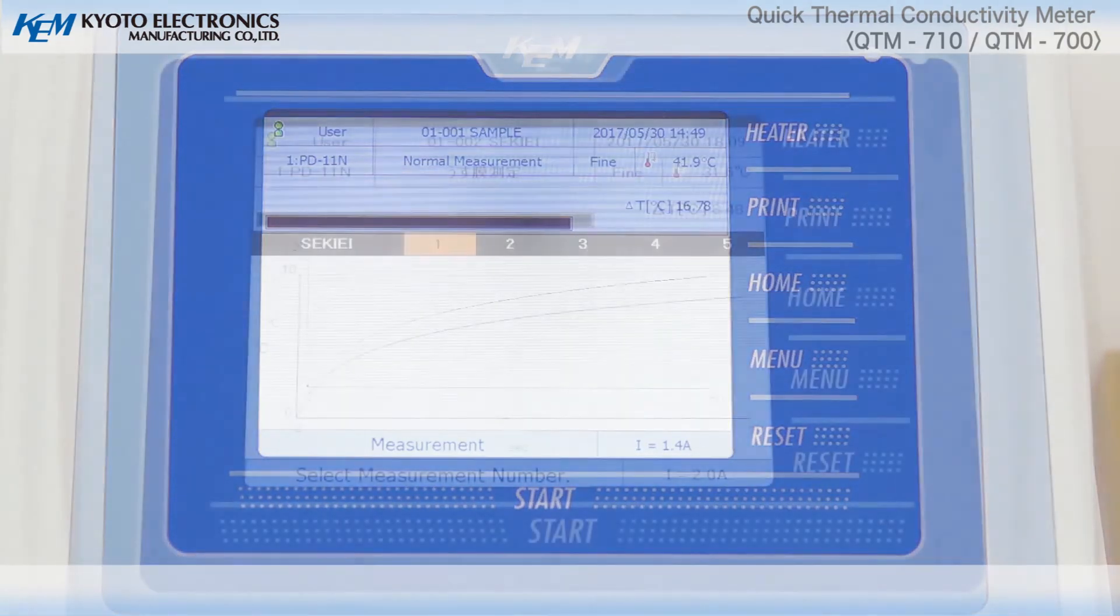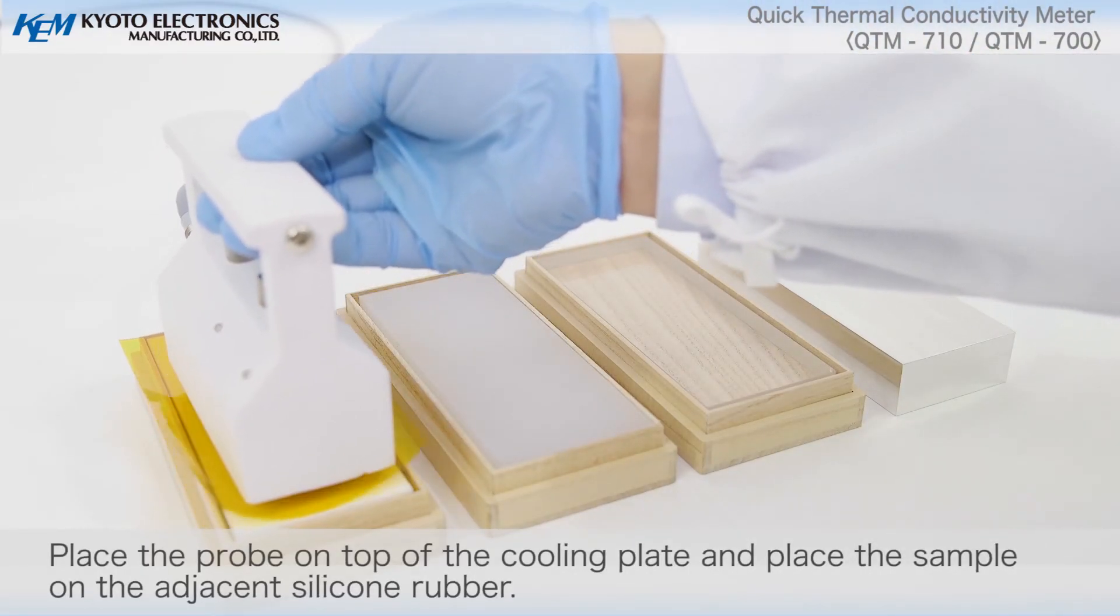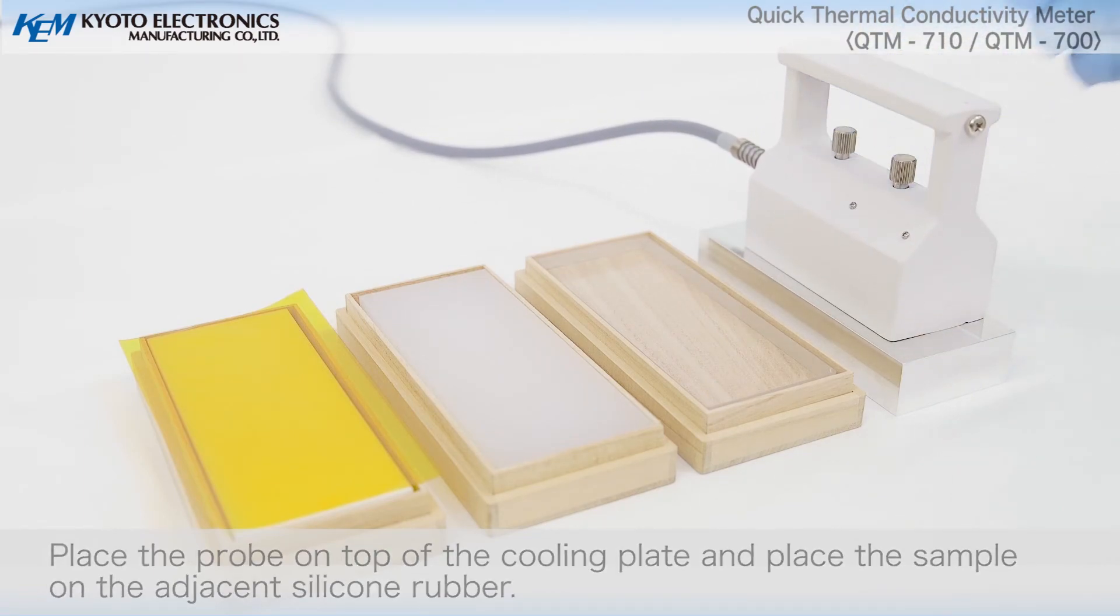After the measurement is complete, the results are displayed. Place the probe on top of the cooling plate and place the sample on the adjacent silicon rubber.